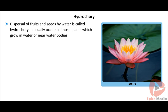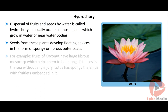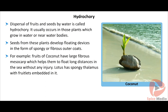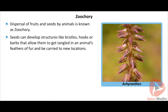Dispersal of fruits and seeds by water is called hydrochory. It usually occurs in plants that grow in water or near water bodies. Seeds from these plants develop floating devices in the form of spongy or fibrous outer coats. For example, fruits of coconut have a large fibrous mesocarp which helps them float long distances in the sea without injury. Lotus has a spongy thalamus with fruitlets embedded in it.